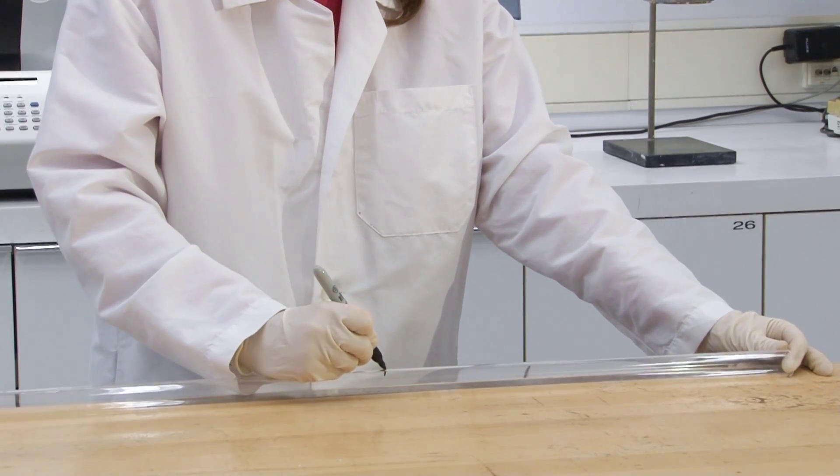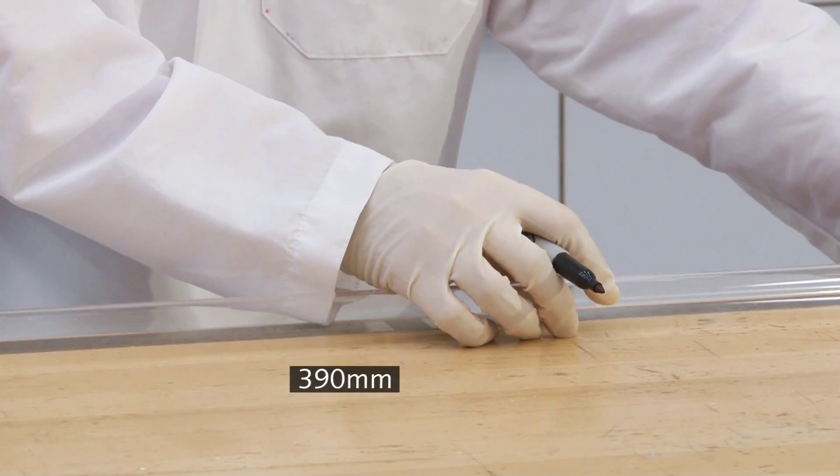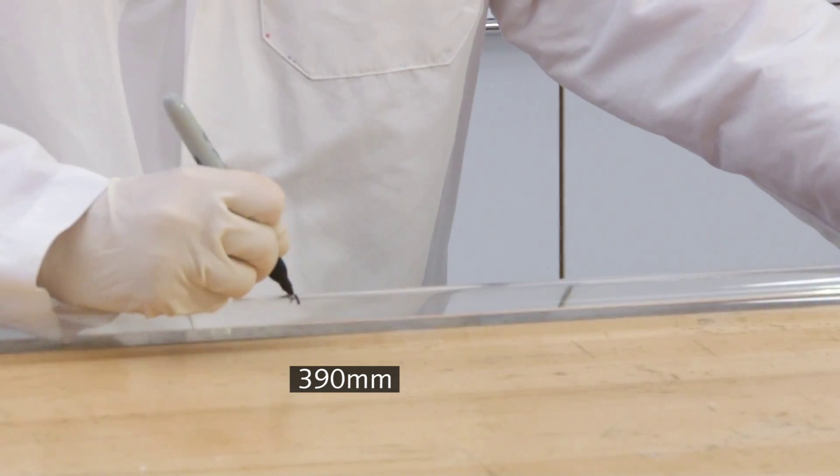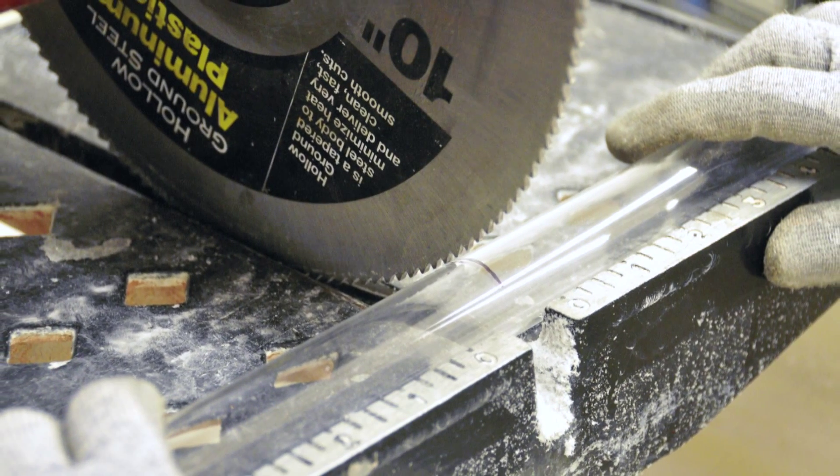Cut the transparent plastic tube into columns 390 millimeter in length using a tile saw. At least two columns per grout are needed for each medium and injection condition.